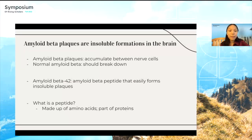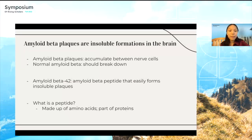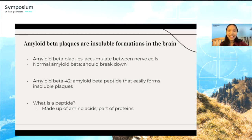The first biomarker is amyloid beta plaques, which accumulate between neurons in the brain. In normal conditions, amyloid beta peptides break down rather than consolidating. One specific peptide — amyloid beta 42 — has 42 amino acids and easily forms amyloid plaques. Research has shown this is one of the primary peptides implicated in Alzheimer's disease.